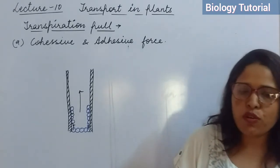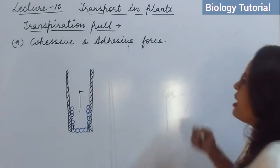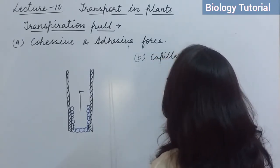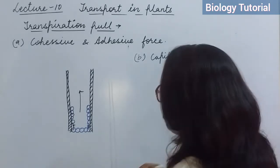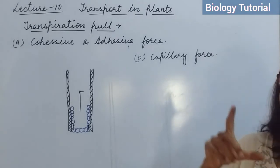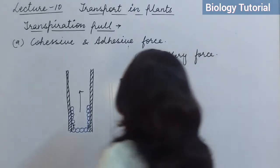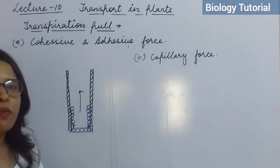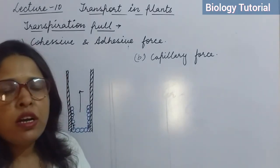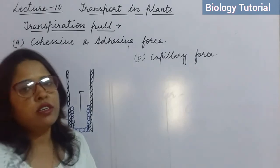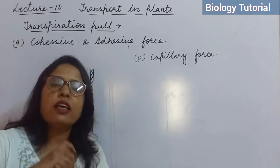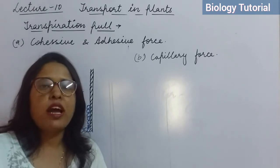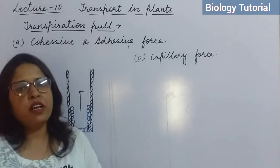Another force contributing to transpiration pull is capillary force or capillary action. Due to capillary action, water rises upward in the xylem vessel, developing a water column. A capillary is a small tube in which water moves upward — the thinner the tube, the higher the water level. Xylem vessels are very thin capillary tubes, so water moves upward within them.